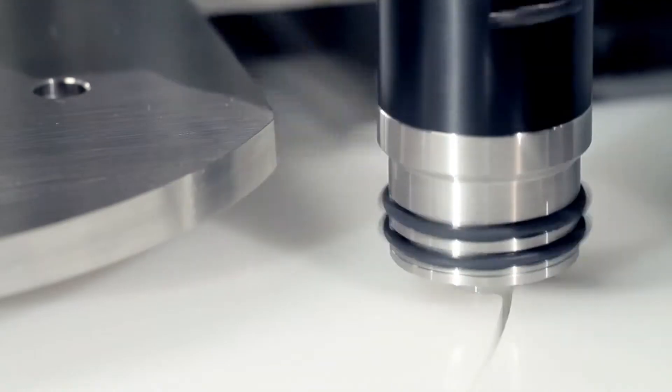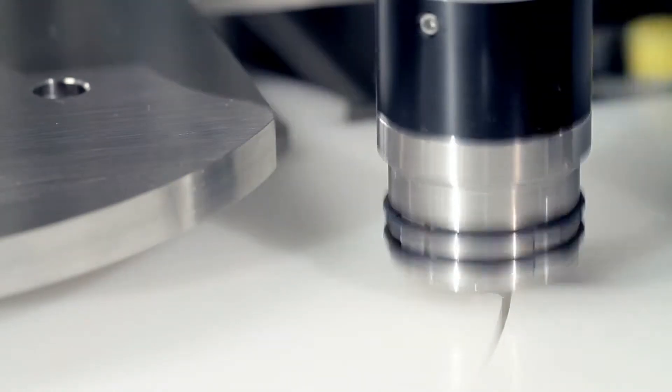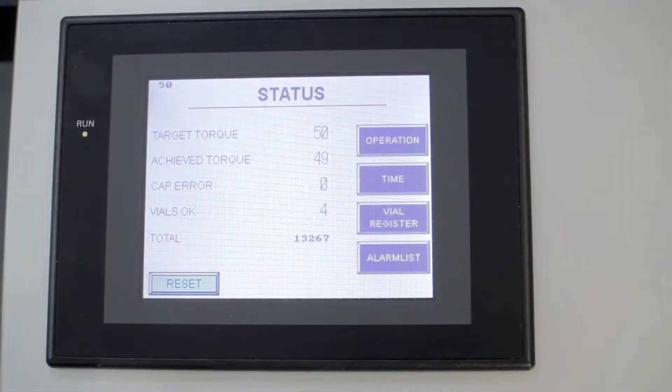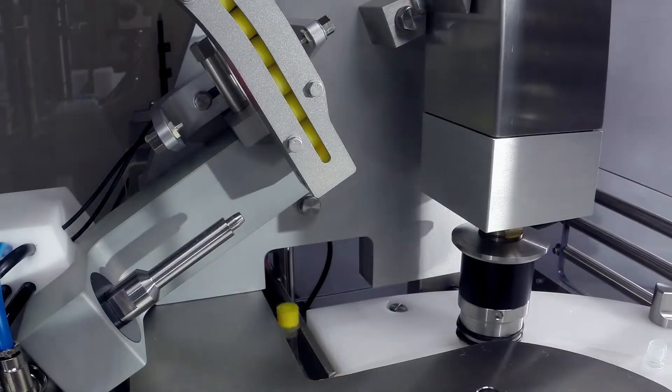Capping torque is precisely controlled and monitored. This prevents leakages due to fluctuating air pressure in storage or transit and ensures customers benefit from an easy process validation.